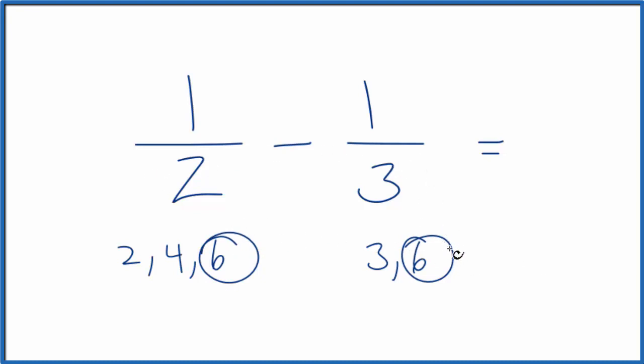So that's the lowest common multiple. If I can get this to be six and this to be six, I can just subtract the numerators. I can do that by multiplying by one. But instead of one, I'm going to multiply the top and bottom by three, because that'll give me the six.